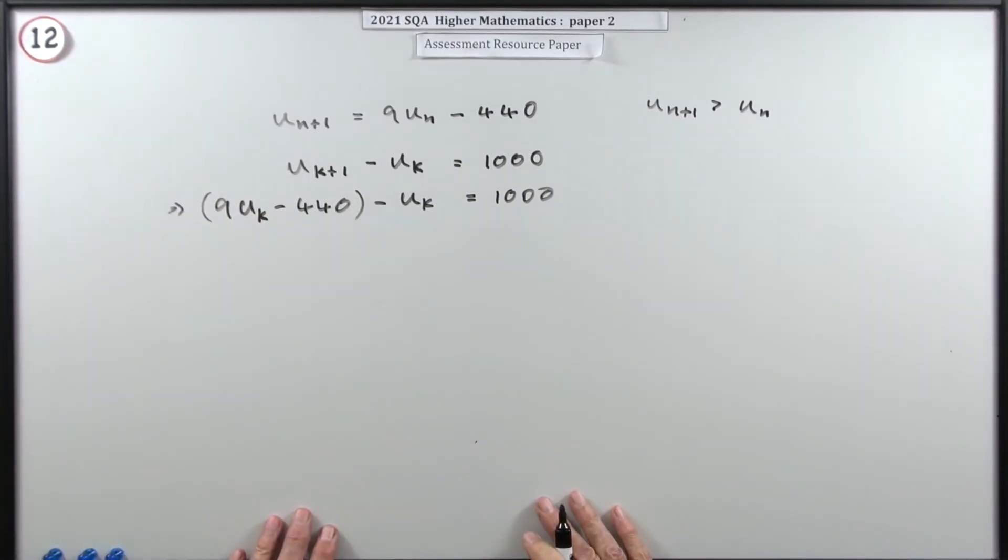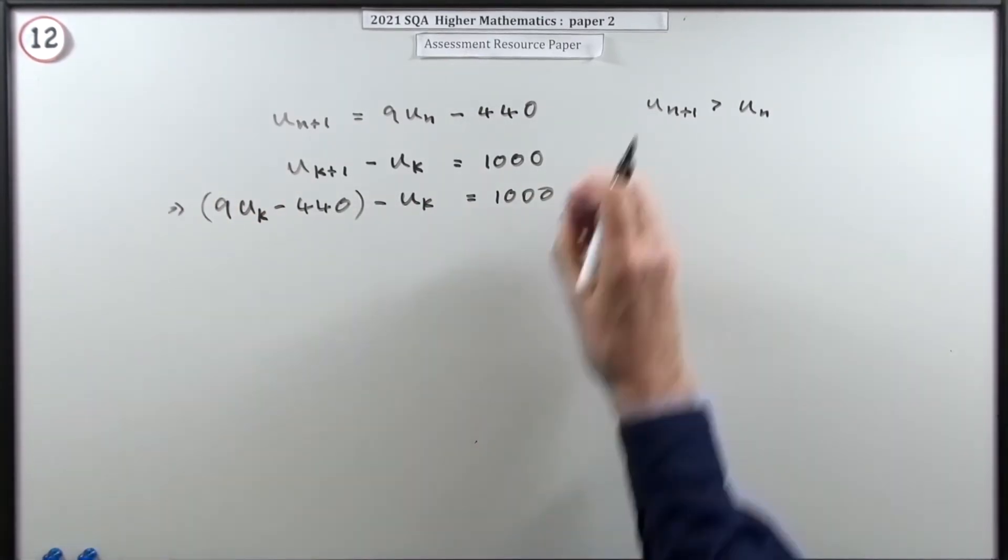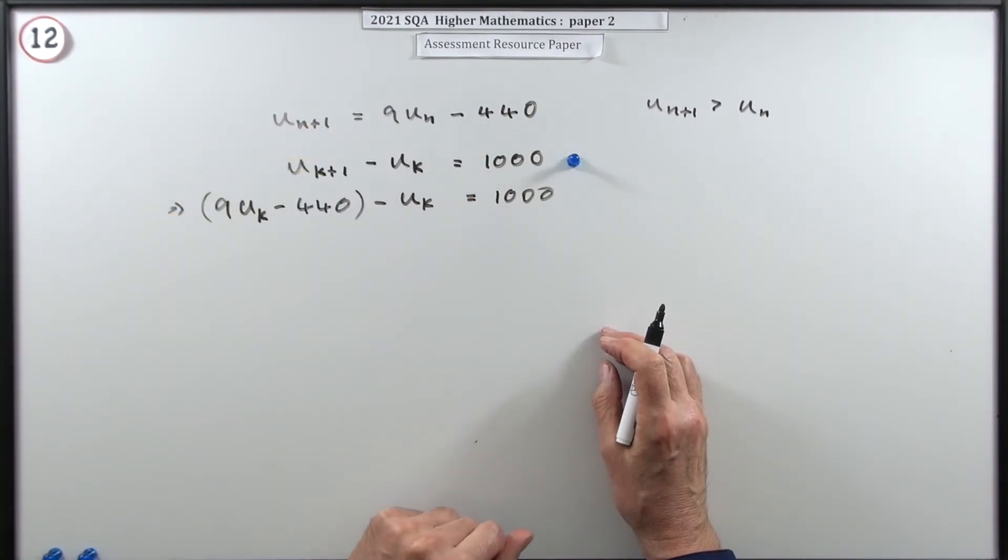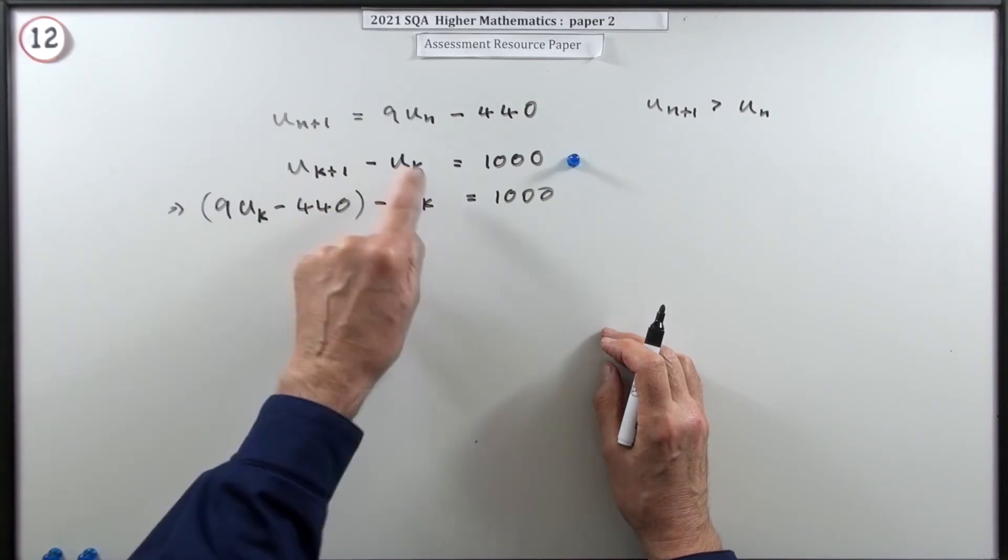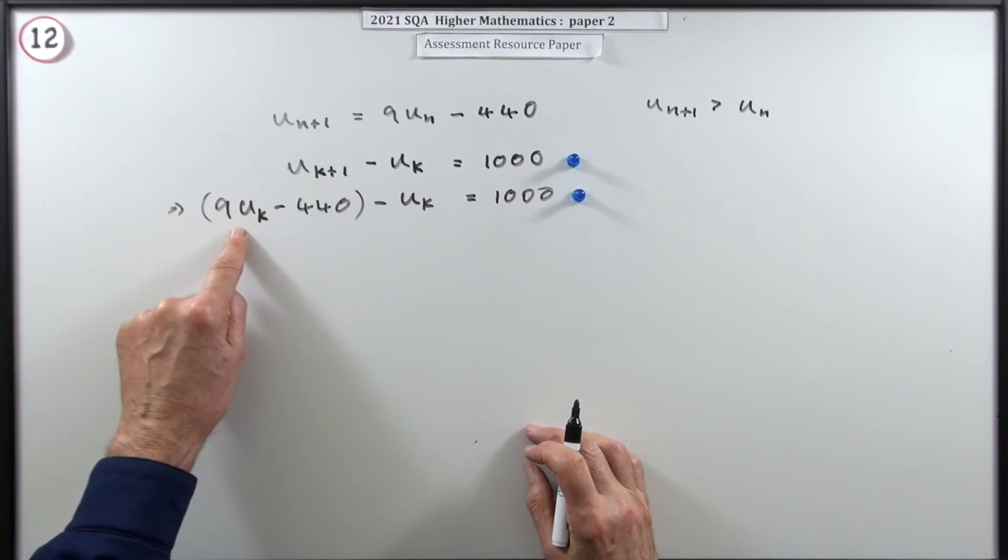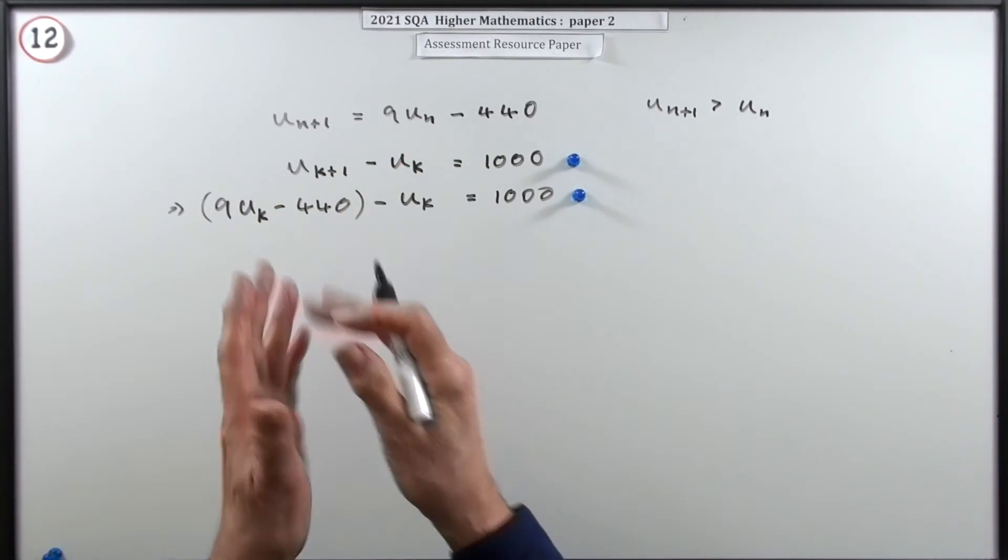Right, what was two marks there? You got one mark for realizing that that was referring to the subtraction here. When it said the difference, it meant you actually subtracted them. And then there's one mark for replacing that with its equivalent which mentions the previous term, so there's only one unknown.